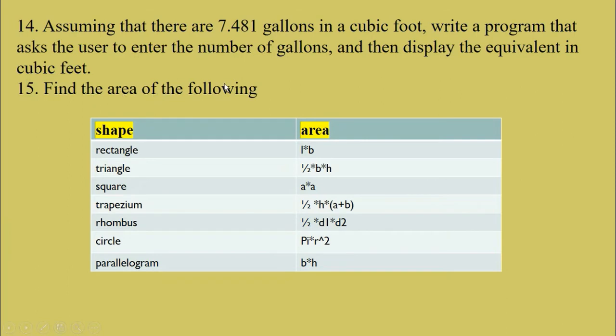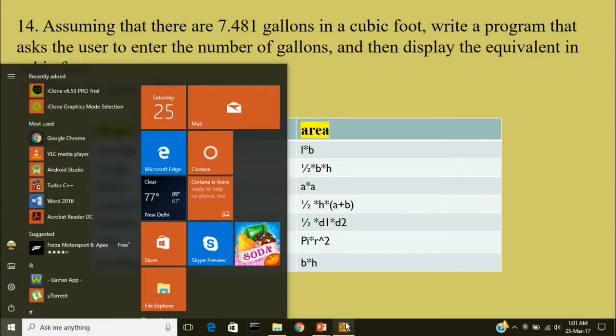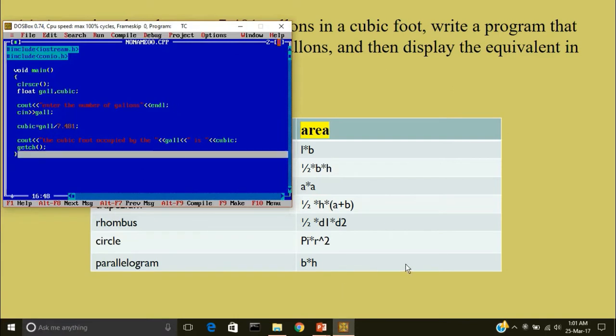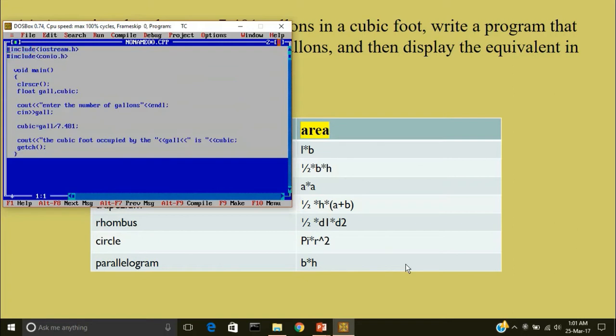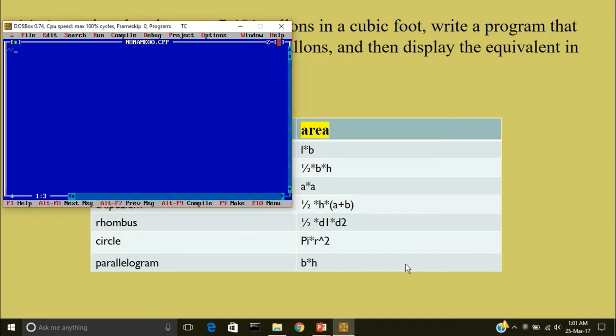Question number 15. Find the area of the following. Here is a table in which in one column is shape and the formula to find the area of the shape. The first is rectangle l star b. It is similar to find the product of two numbers. Now triangle. Area of the triangle is half star b star height. Okay we'll write this program.